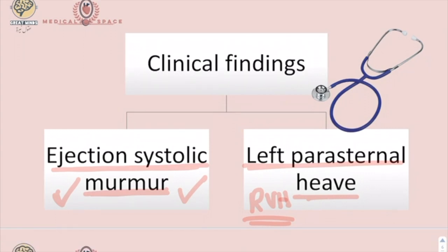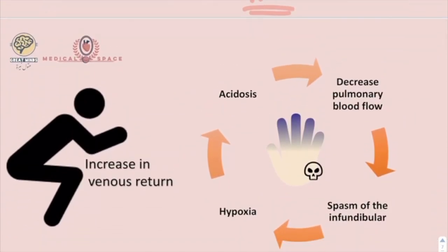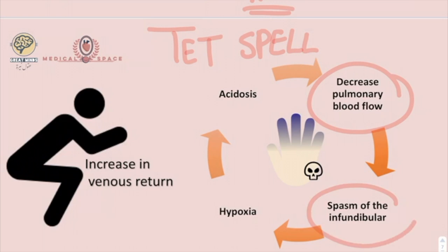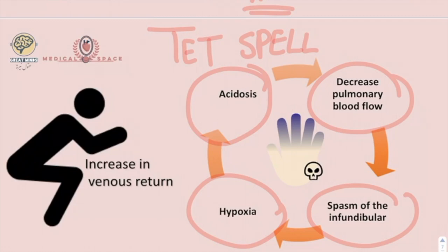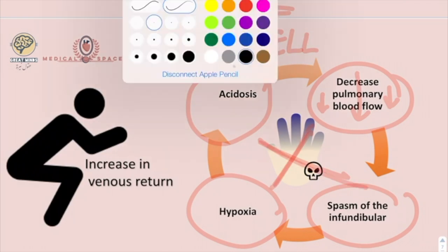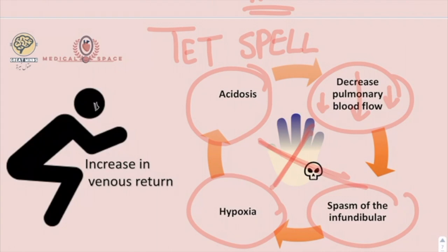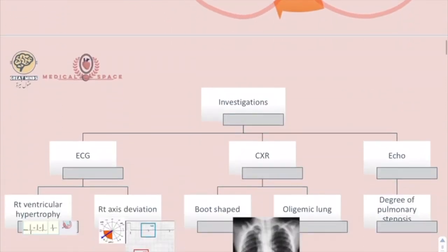There is something famous called the tet spell. In a tet spell, the patient has an attack of decreased pulmonary blood flow due to spasm of the infundibulum, which causes hypoxia. The hypoxia leads to acidosis, the acidosis causes further decrease in pulmonary blood flow — a vicious cycle. Patients present with crying and agitation in infancy, or if older, they adopt a squatting position. Squatting causes kinking of the femoral artery and vascular constriction, increasing venous return to the heart, which improves symptoms and increases blood flow through the pulmonary arch.